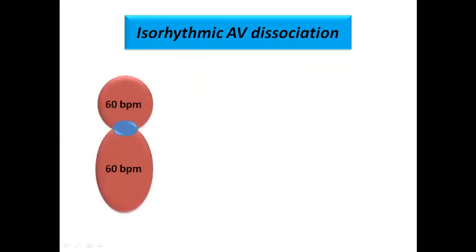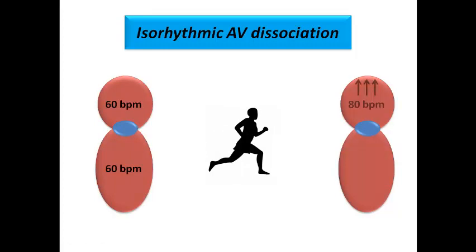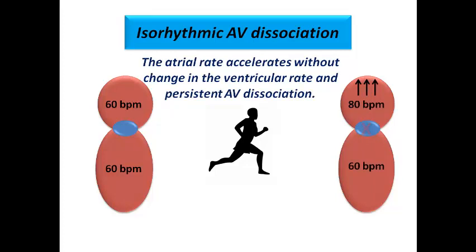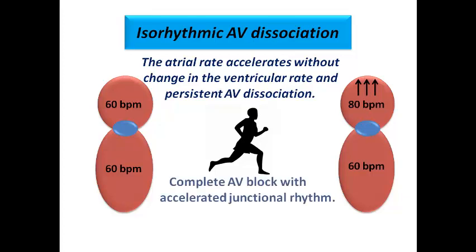In another example, when the patient undergoes treadmill testing the atrial rate increases but the ventricular rate remains nearly the same. This confirms an AV node problem — the ventricle does not follow the atrium when the atrial rate accelerates, revealing that the junctional rhythm is actually an accelerated escape rhythm due to complete AV block. This patient may need a temporary pacemaker, and reversible causes for AV block must be sought.